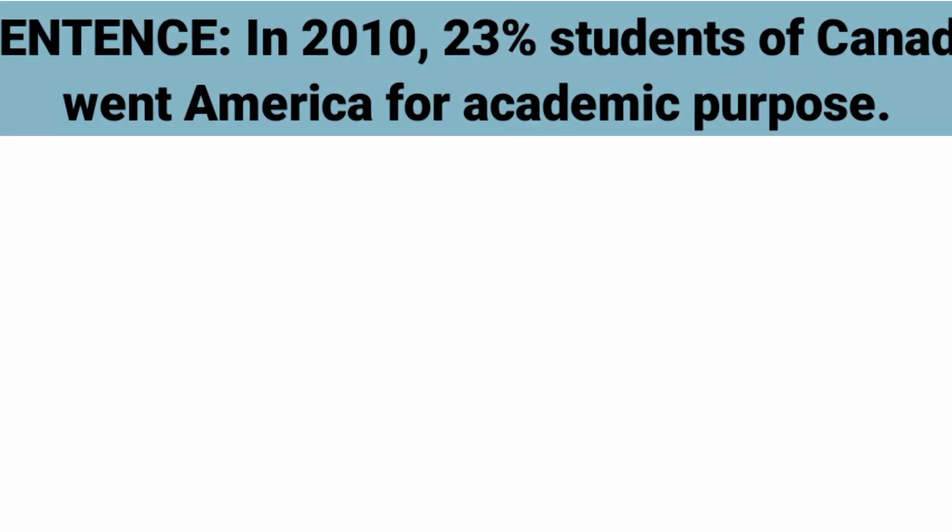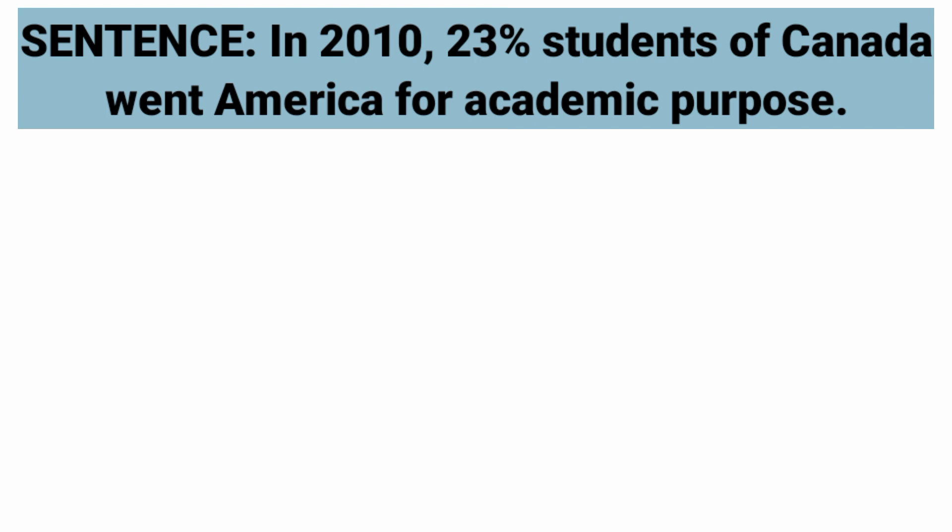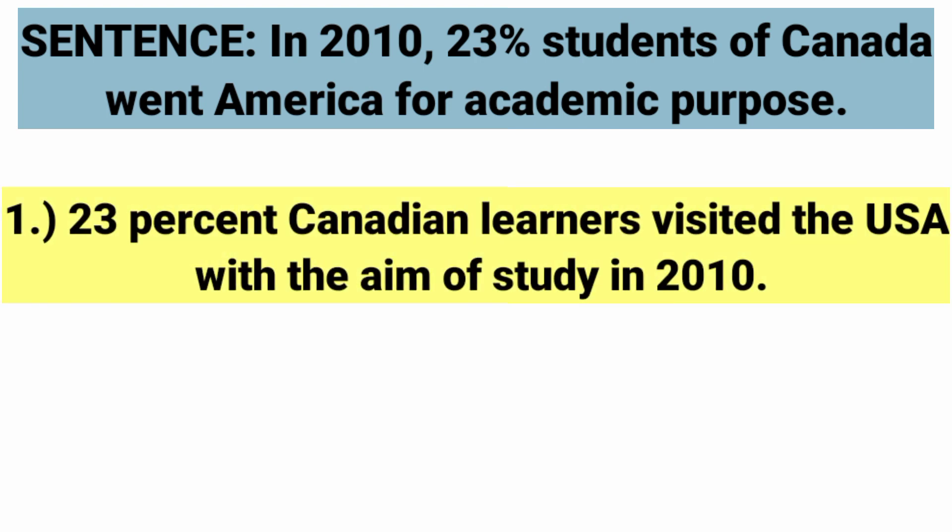First, I have a note of Task 1 data: in 2010, 23% of students from Canada went to America for academic purpose — that is, for study purpose. Now, we have to add this same type of data repeatedly in Task 1 with variations. So let's see how we can add variations to sentences based on this data.